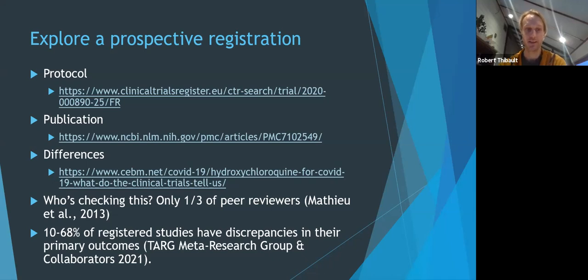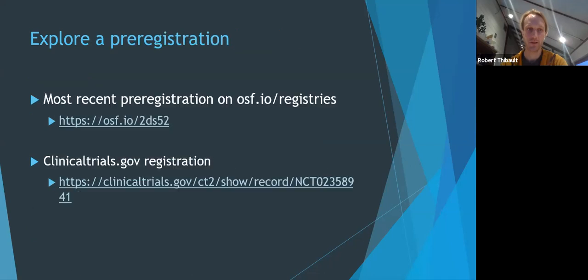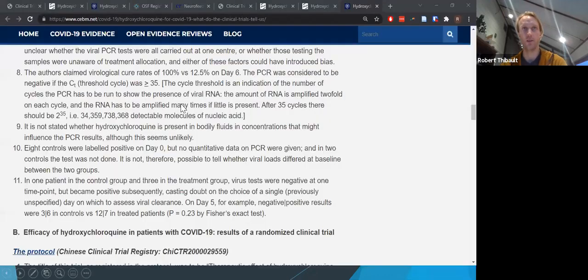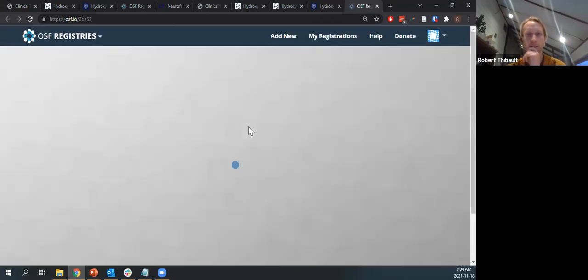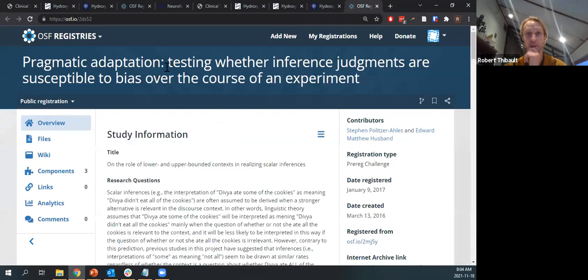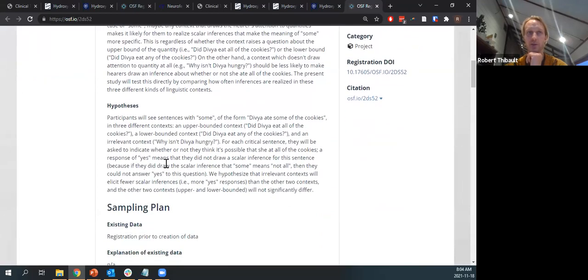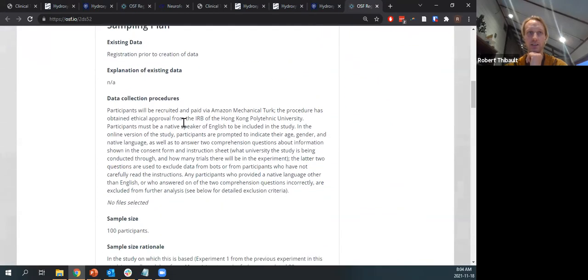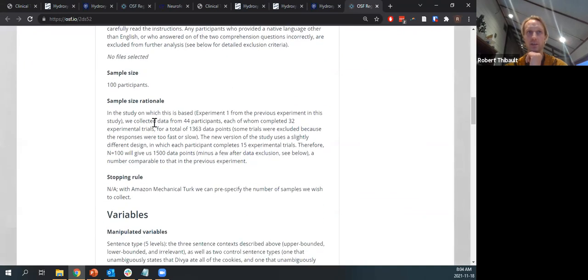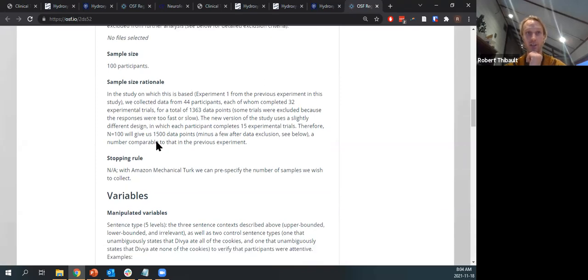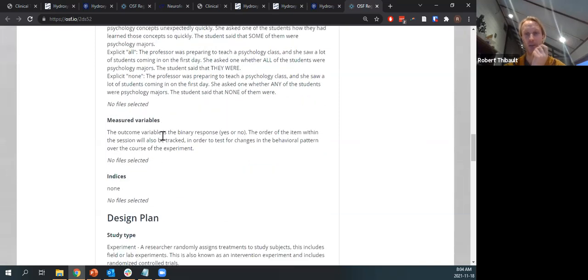okay so one problem here is that nobody's really checking for these discrepancies between a registration and a publication so there's a study quite old now eight years ago but that asked reviewers whether they ever opened registration when they're reviewing a clinical trial and they found that about a third of reviewers reported that they they at least opened the registration and looked at it editors often aren't checking some journals are getting better at this but because this isn't systematically checked in peer review it's left to people like us the readers of these papers that sometimes have to check the registration and compare it to the protocol to see if there's a risk of bias